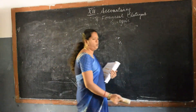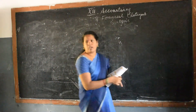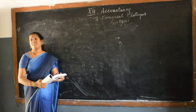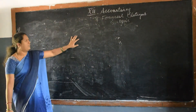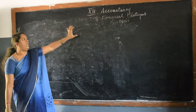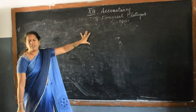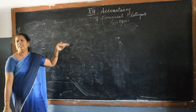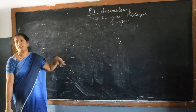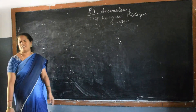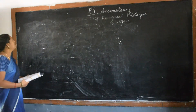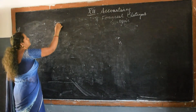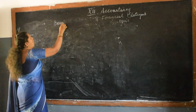We are going to move on to the second method for finding out the financial statement analysis. The first method we conducted was the comparative statement — the word itself shows it is a comparison between two years, and it is easy to identify. The second method is the common size statement.